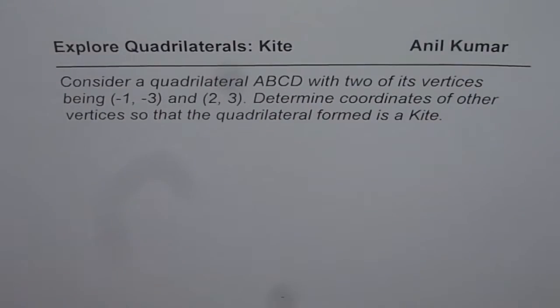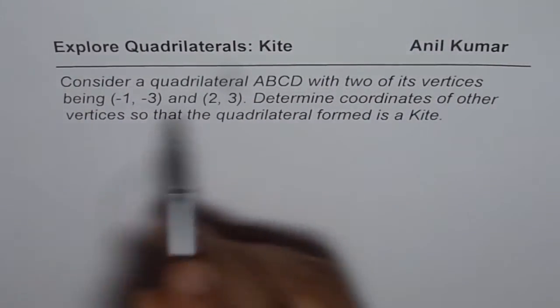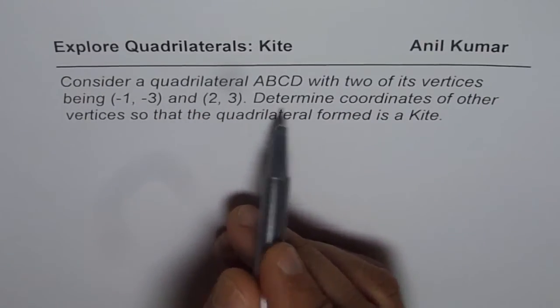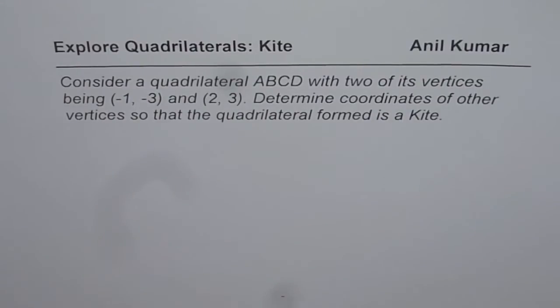Let's read the question once again. Consider a quadrilateral ABCD with two of its vertices being (-1, -3) and (2, 3). Determine coordinates of other vertices so that the quadrilateral formed is a kite. I do have many examples where we are given three vertices and we need to find the fourth one. In this particular case I've given you a lot of flexibility. Obviously there could be multiple answers and your answer may not match mine. But the idea here is to understand the strategy.